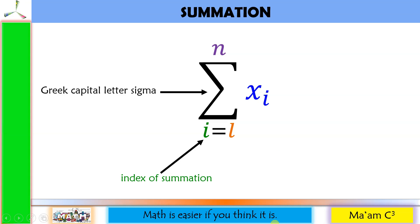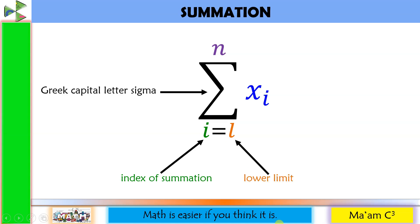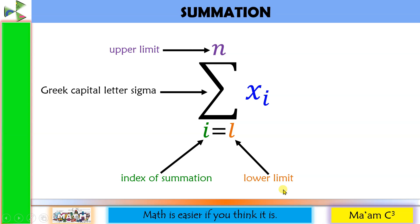This is the index of summation. I use letter I here. I equals L indicates that the summation will start at X sub L. This one is the lower limit — it indicates the starting value that the index will take on. So L here has a numerical value. If L is the lower limit, this one is the upper limit, which indicates the largest value that the index will take on.